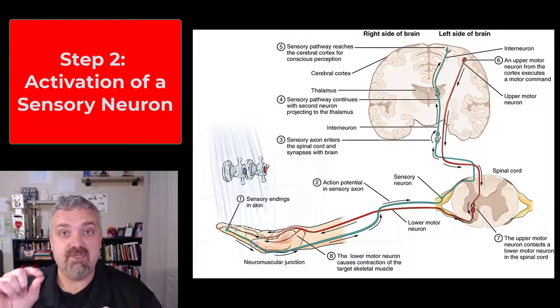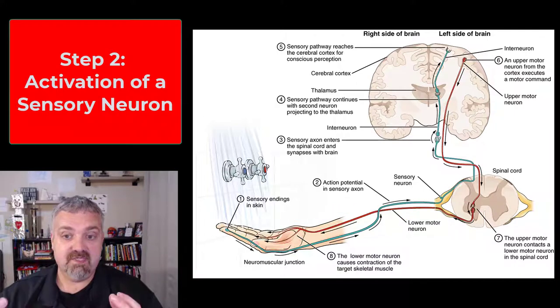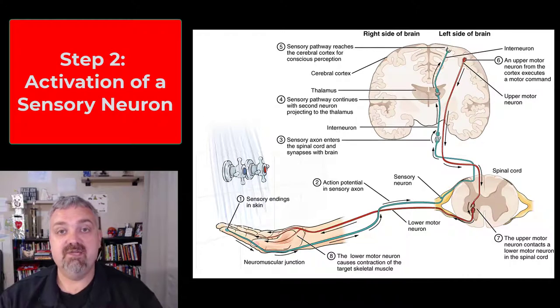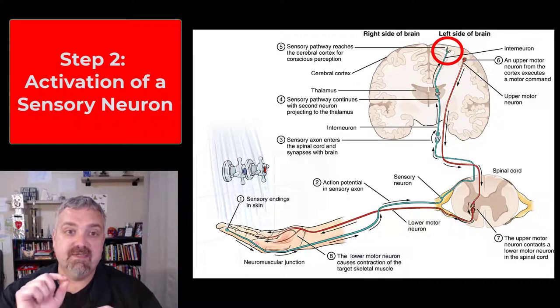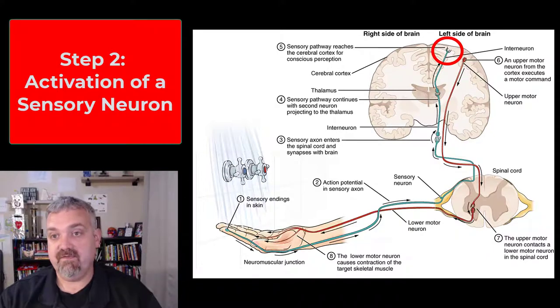Now if this was a reflex it would just turn around the spinal cord and you would respond. But in this case we're going to go all the way to our primary sensory cortex which is the post central gyrus of our parietal lobe. So the sensory receptor has been triggered and now it's sending a signal up that sensory nerve.